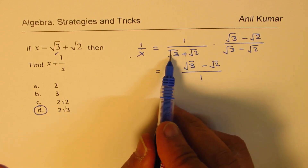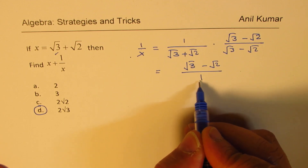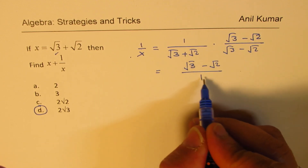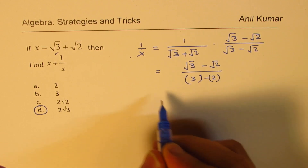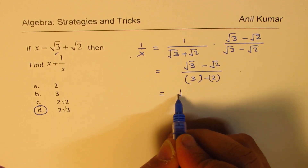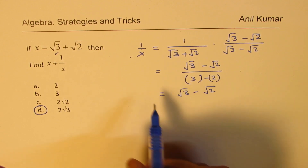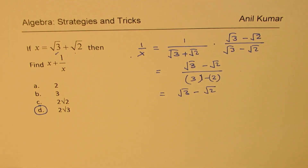As soon as we do that, we get square root 3 minus square root 2 in the numerator. The denominator is the difference of squares: 3 minus 2, which is 1. So 1 over x equals square root 3 minus square root 2. When we add x and 1 over x, we clearly get 2 times square root 3 — once again confirming what we just proved.